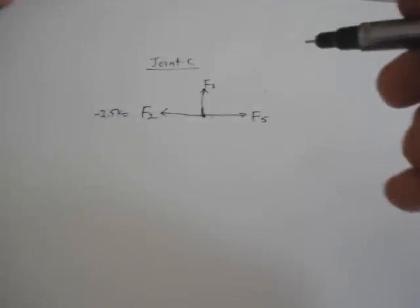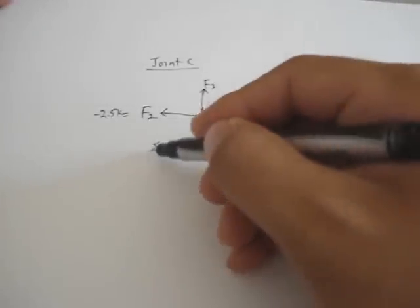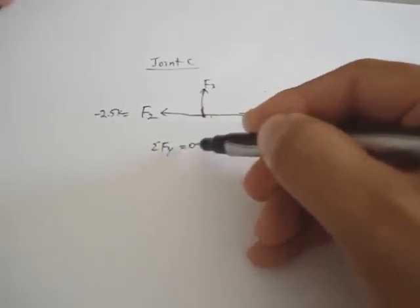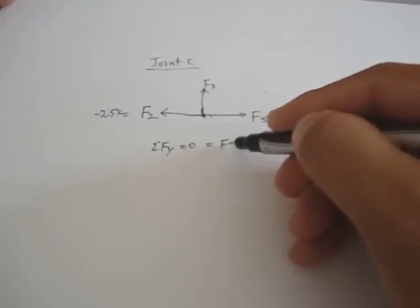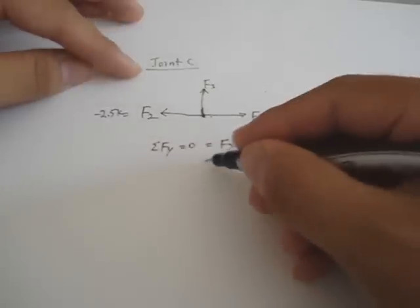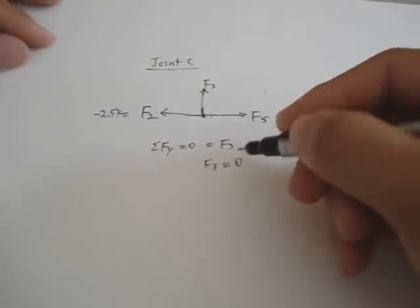Okay. Now let's do sum of the forces in y. Sum Fy equals 0, and that's equal to F3. That's it. And which means that F3 is a zero force member.